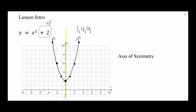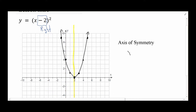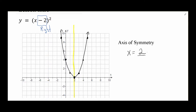The axis of symmetry is a vertical line, so its equation is x equals something. In the first example it's x equals 0, and in the second it's x equals 2 — basically x equals the x-value of the vertex. When asked for the axis of symmetry, make sure 'x equals' is there; it's the equation of a vertical line in two dimensions, not just a number.